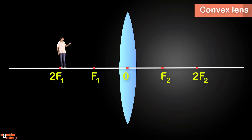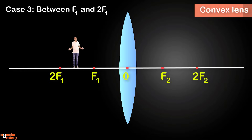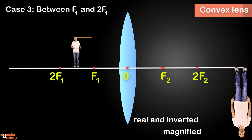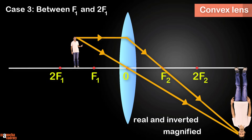Now I'm going to move closer to the lens. Case 3: the object is between F1 and 2F1. I would suggest you pause the video here, draw the ray diagram, and try to find the image yourself. Also write down the properties of the image formed. The correct answer is: it's a real and inverted image that's magnified, and as you can see from the ray diagram, the position of the image is beyond 2F2.